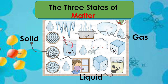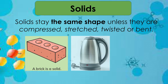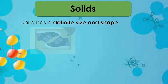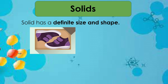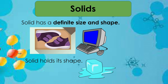Solids stay the same shape unless they are compressed, stretched, twisted, or bent. A brick is a solid; wood, metal, and plastic are solids. More examples: a kettle, plastic cups, and saucers. Solid has a definite size and definite volume — it keeps its size no matter how you try to change it. For example, put shoes in a box and they stay the same size. Solids hold their shape because the molecules are tightly packed together. Ice and snow are examples of the solid state.